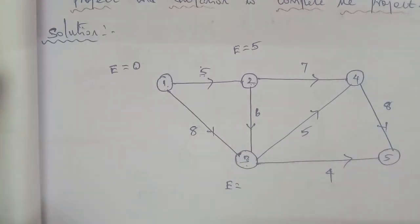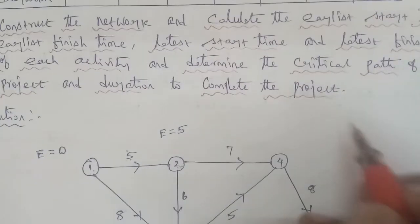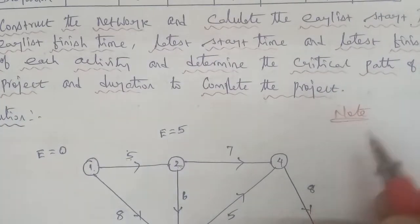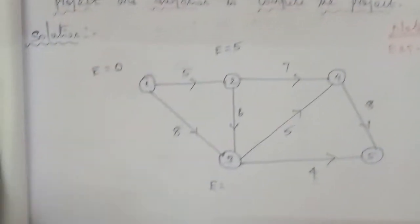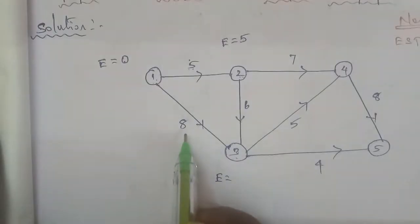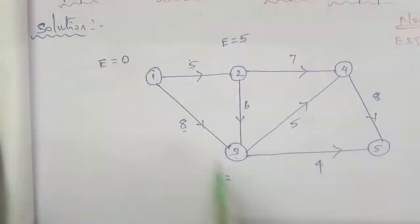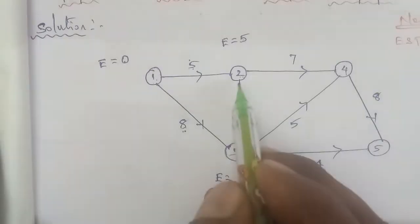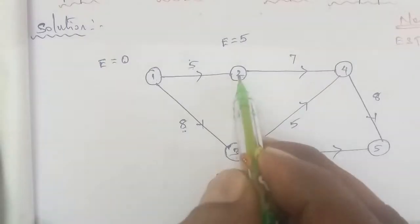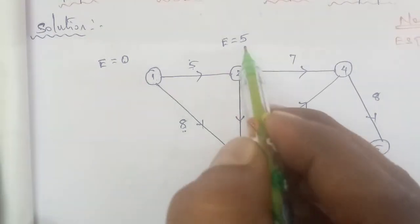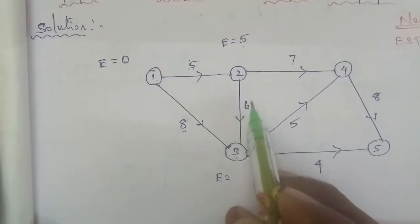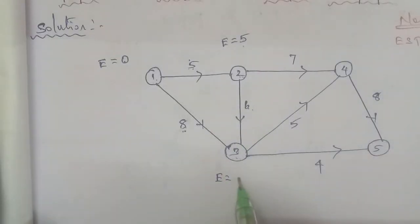For node 3, we have two incoming paths: from node 1 to 3, that is 0 plus 8 equals 8; and from node 2 to 3, that is 5 plus 6 equals 11. We take the maximum value. So 8 versus 11 — the maximum value is 11. So E at node 3 is equal to 11.